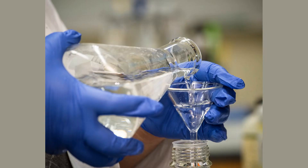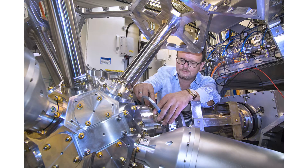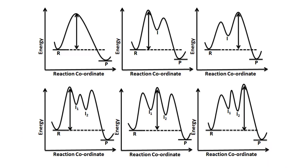By the end of this video, you will have a solid understanding of chemical kinetics and how it applies to real-world scenarios. Chemical reactions involve the breaking and forming of chemical bonds between atoms and molecules. These reactions can occur at different rates depending on various factors. The rate of a chemical reaction is the speed at which the reactants are converted into products, usually measured in terms of the change in concentration of the reactants or products over time.